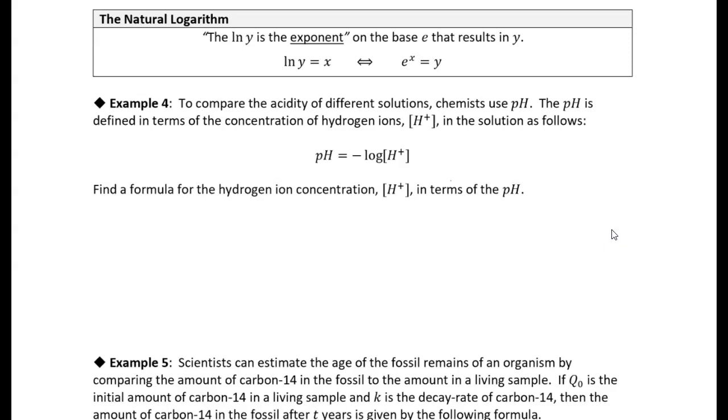So now we want to find a formula for the hydrogen ion concentration given the pH. So we're basically trying to compute the inverse of this pH function. All right, so first of all, I want to solve for hydrogen ions. I want my output to be hydrogen ions and my input to be pH, because I'm trying to flip around the input and the output here.